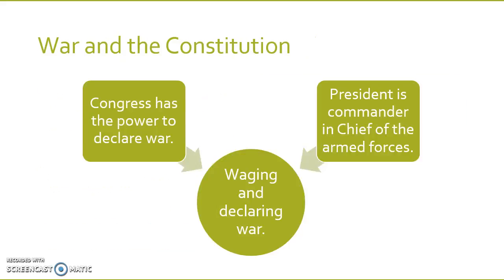To recap: what does the Constitution say about waging and declaring war? To break it down, Congress has the power to declare war, yet the president is commander-in-chief of the armed forces. So you can see that neither branch of government has full authority. I'm asking you in this assignment to consider the congressional role in approving war — war-making powers, war actions, that sort of thing.